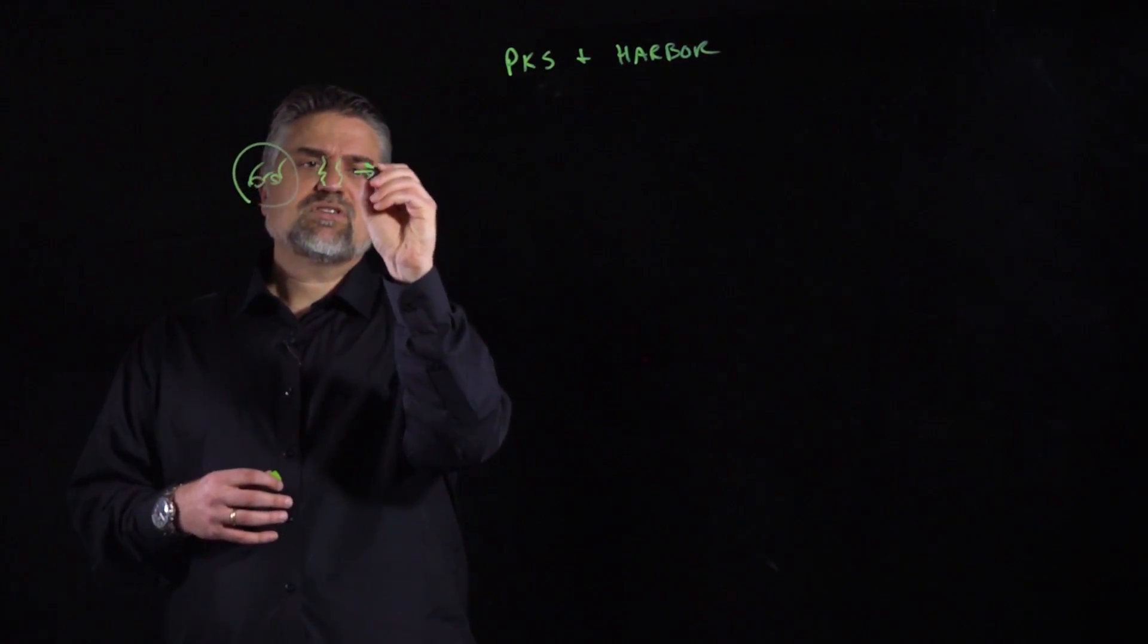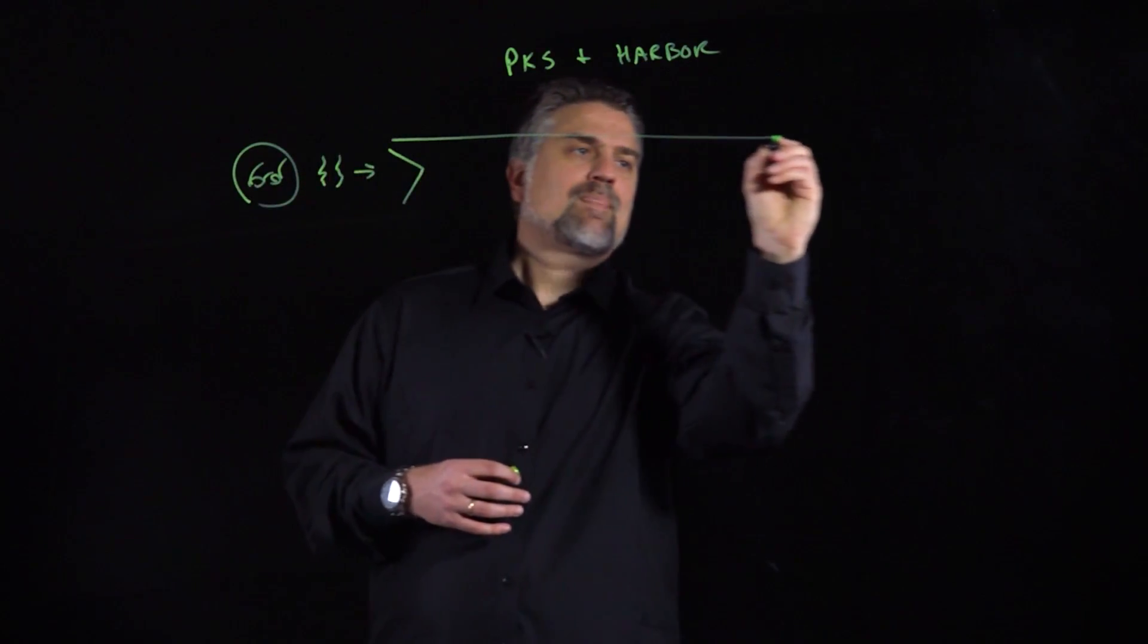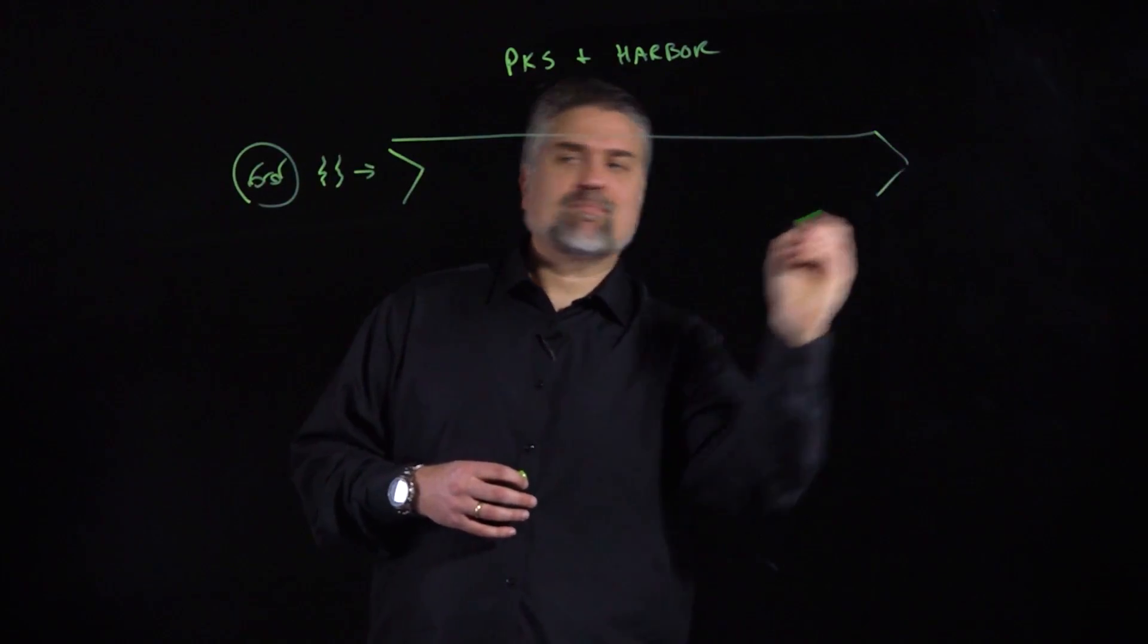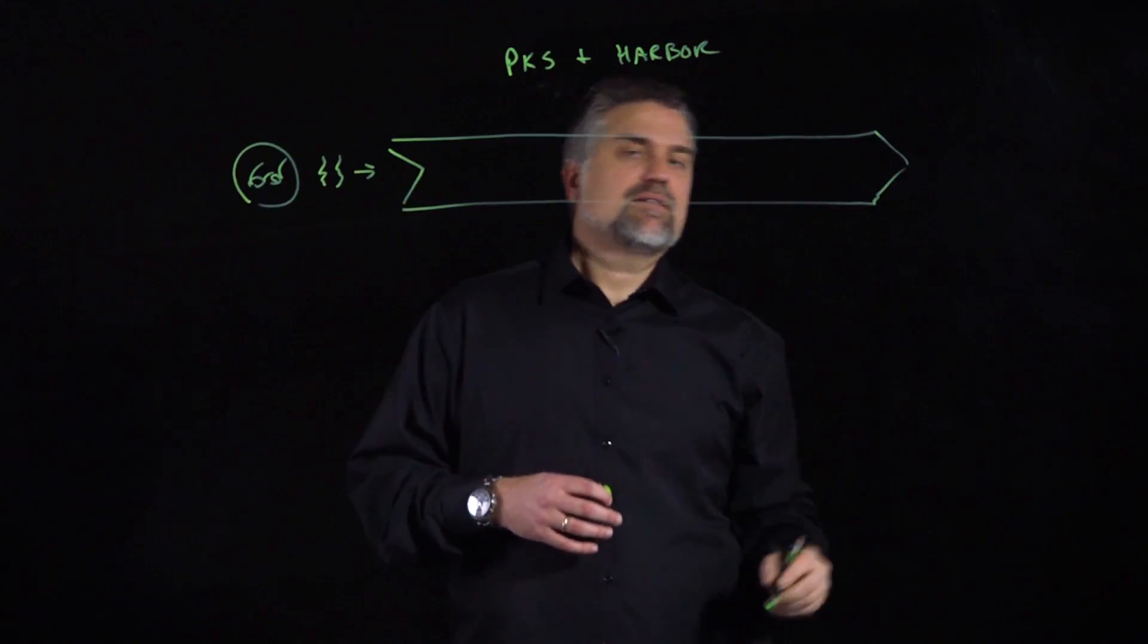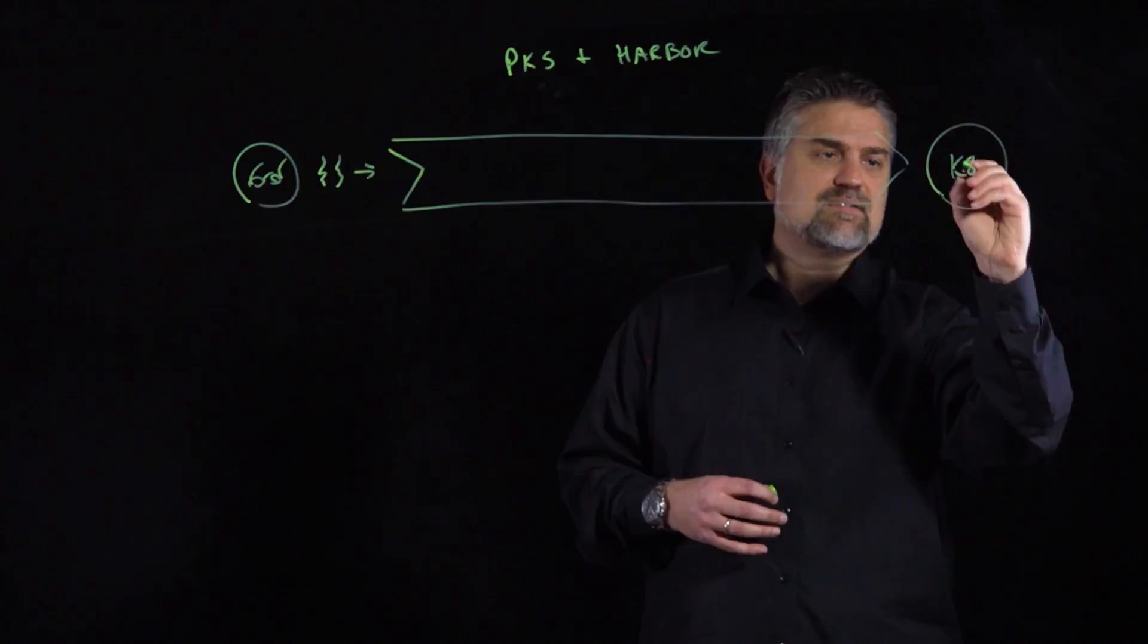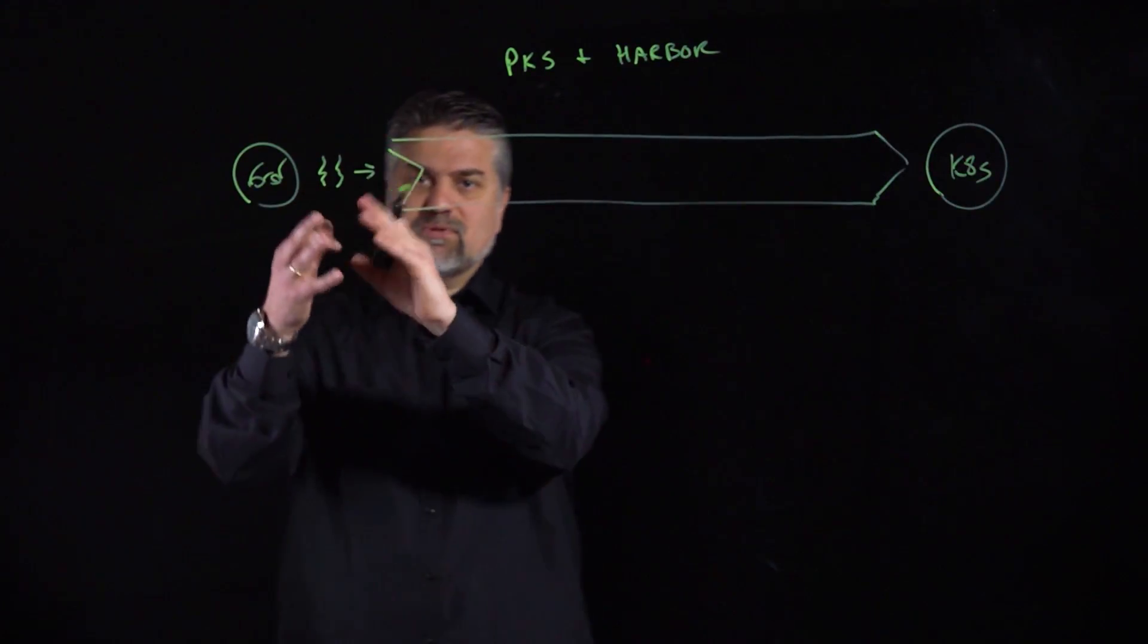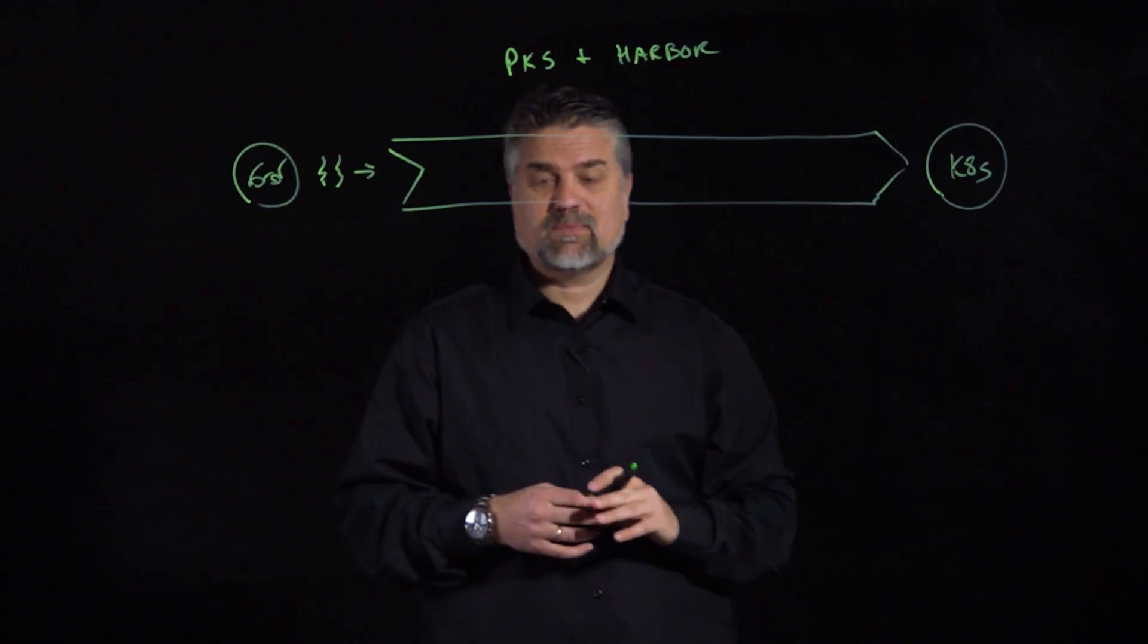We typically want to push that code inside some sort of a pipeline. And the end goal of that pipeline, in our case, is we want to get to a running application inside of K8s. That's our goal. So, how do we get from here to there with our code that we're building and committing and having our pipeline start off?